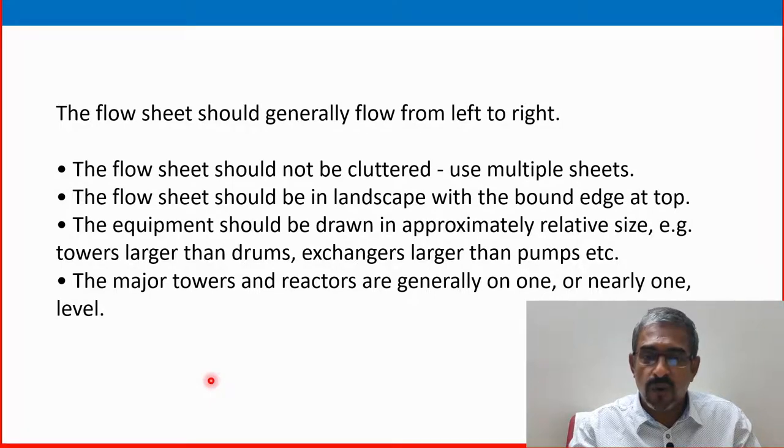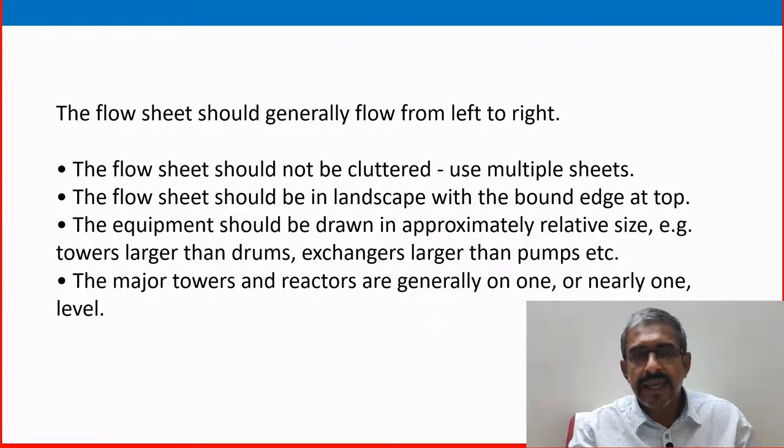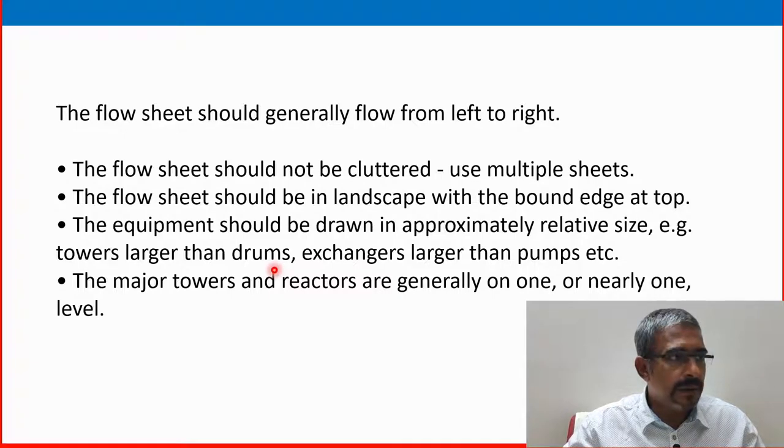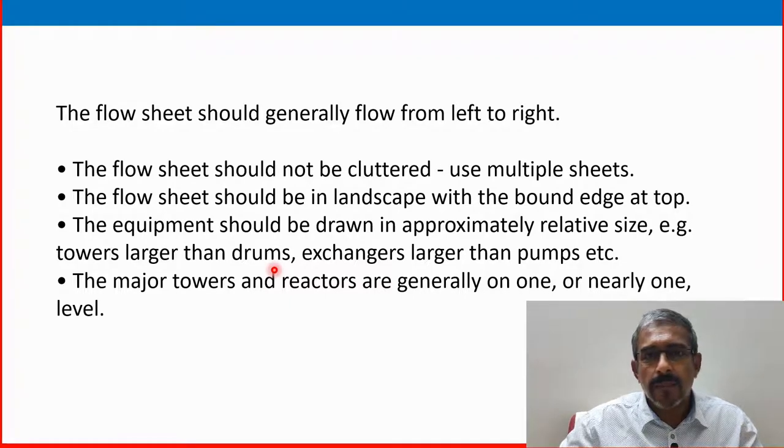The flowsheet should generally flow from left to right. The flowsheet should not be cluttered. Use multiple sheets. At least some area one unit you have to provide in one paper, one sheet, and you have to use another one unit. Use another one sheet like that one. Don't put all together in one sheet. The flowsheet should be in landscape with the bound edge at the top. The equipment should be drawn approximately relative size. Example, tower larger than drum. Always in the previous drawing it is showing that tower, a column absorber is larger than a drum. Some of the equipment are in vertical, some of them are in horizontal position.